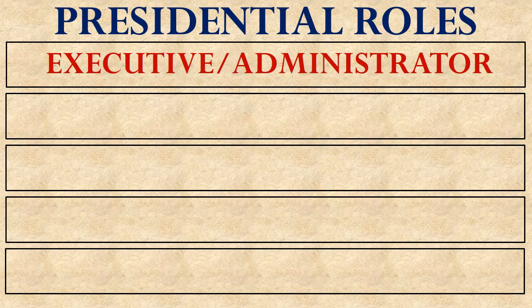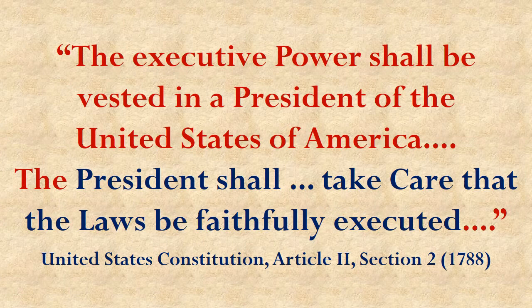The first of those roles is as the Executive or Administrator for the country. An Executive or Administrator is the person who carries out the functions of some sort of organization to make sure that things run smoothly. In our system of government, Congress is the one that makes the laws, and then the President is assigned the job of faithfully executing those laws. That's what an Administrator does, and we expect the President to carry out all the laws that Congress has created.